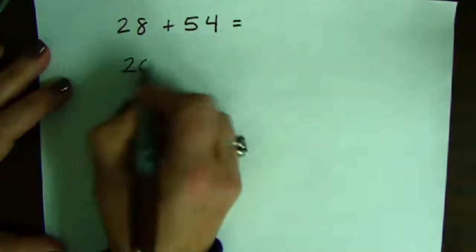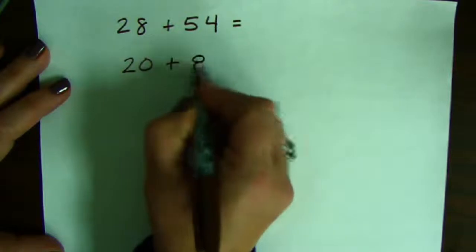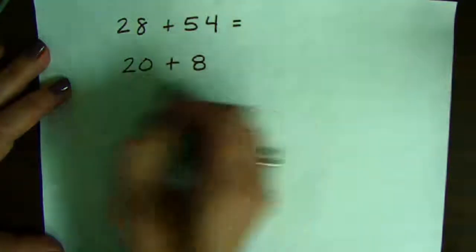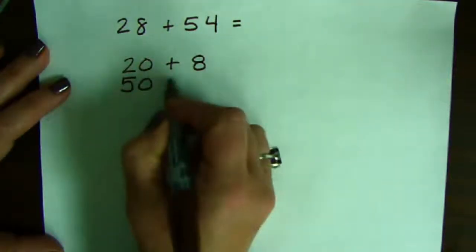I'm going to start by breaking 28 up by place value, 20 plus 8, and 54 up by place value, 50 plus 4.